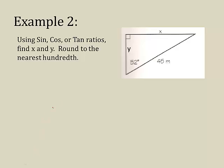Let's try another one. Sine, cosine, or tangent, find x and y. Round to the nearest hundredth. First thing I need to do is decide. Here's my angle theta. What does opposite mean? Well, this side is my opposite. This is my adjacent. And this is the hypotenuse.